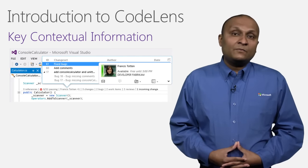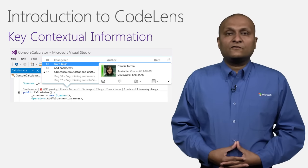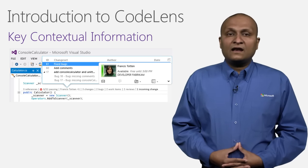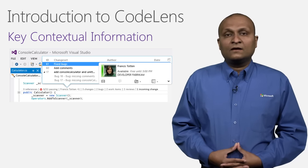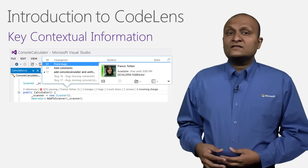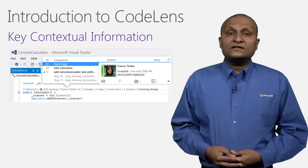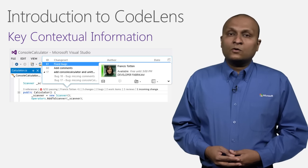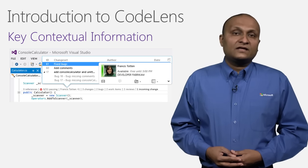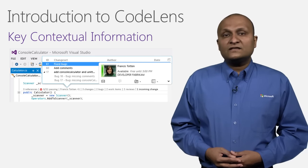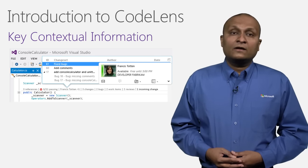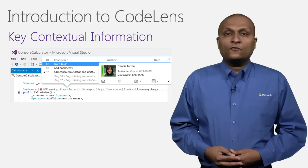CodeLens is a developer heads-up display that provides key contextual information about the code inline in the editor. It allows you to keep your focus in the editor and reduce costly context switching. You can see the CodeLens indicators which occupy the line above the calculator constructor. You can hover over and click on each indicator to get additional information. In this example, you can see that Frances has made some changes and we can contact her directly over email, IM or phone using the CodeLens integration with Skype for Business.